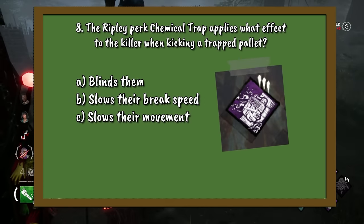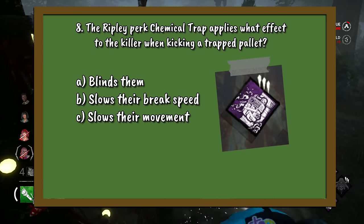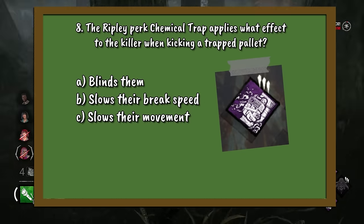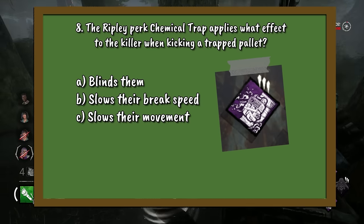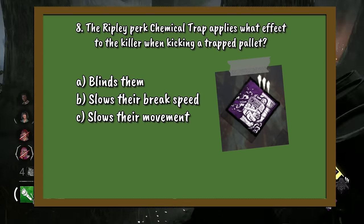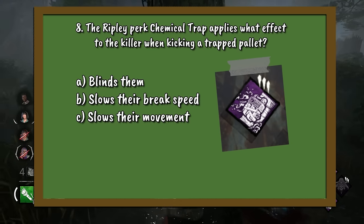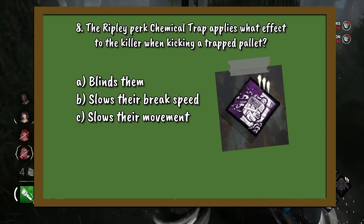Question 8. The Ripley perk Chemical Trap applies what effect to the killer when kicking a trapped pallet? A. Blinds them. B. Slows their break speed. Or C. Slows their movement.